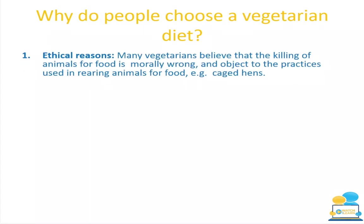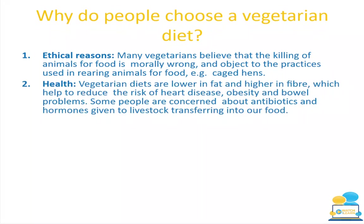Why do people choose a vegetarian diet? The first reason is ethical — many vegetarians believe that killing animals for food is morally wrong and they object to practices used in rearing animals. Vegetarianism is becoming more popular, especially with global warming affecting food security. Eating a vegetarian or vegan diet is better for the environment.